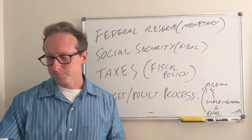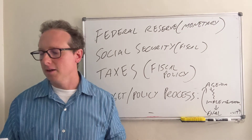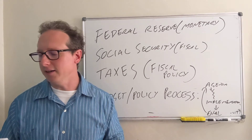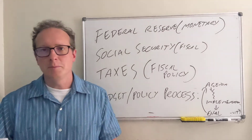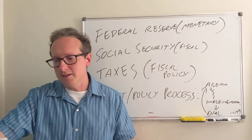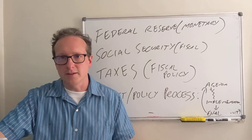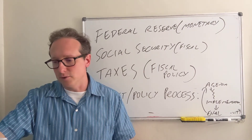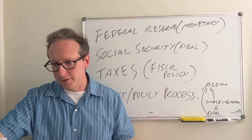Some say Social Security is going to go bankrupt — that's not necessarily true. There are many creative things Congress could do to make sure Social Security benefits continue: pay out of the general fund, cut benefits, or raise the amount of money that is taxed. But let's talk more generally about the budget.